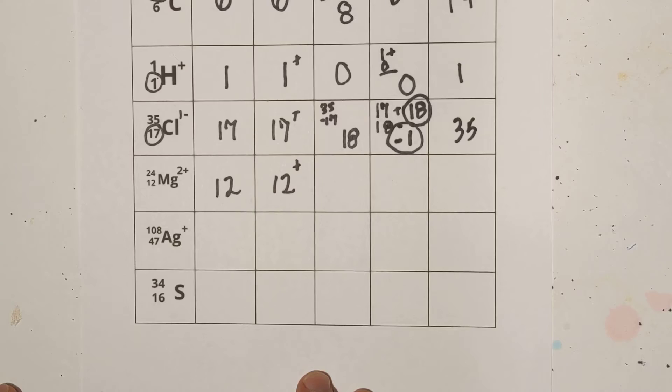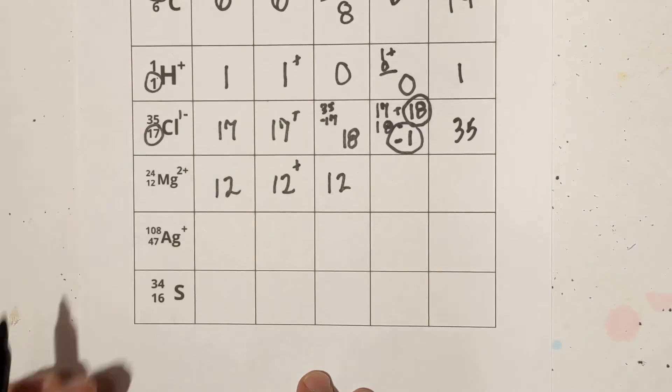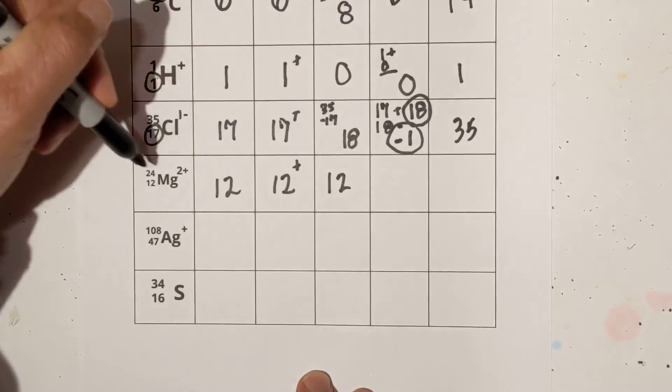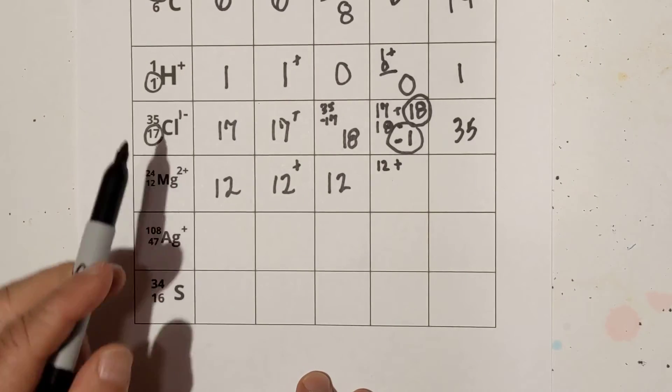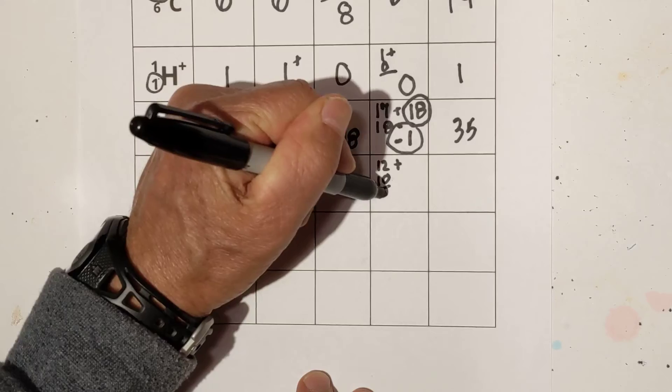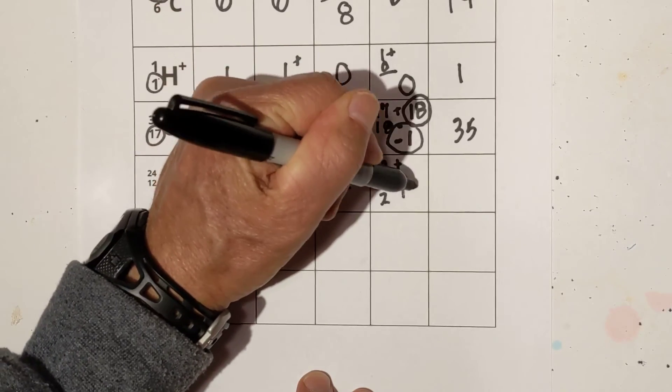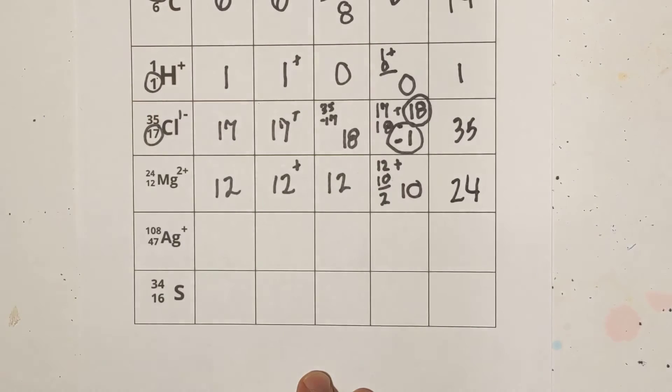I've said that several times. Neutrons is 24 minus 12, so that will be 12. Now, let's go with the number of electrons. We have 12 positives, and we need a plus 2 charge, so that means it's going to have 10, because that gives you a plus 2 charge. So it is 10, and then the mass number is 24.